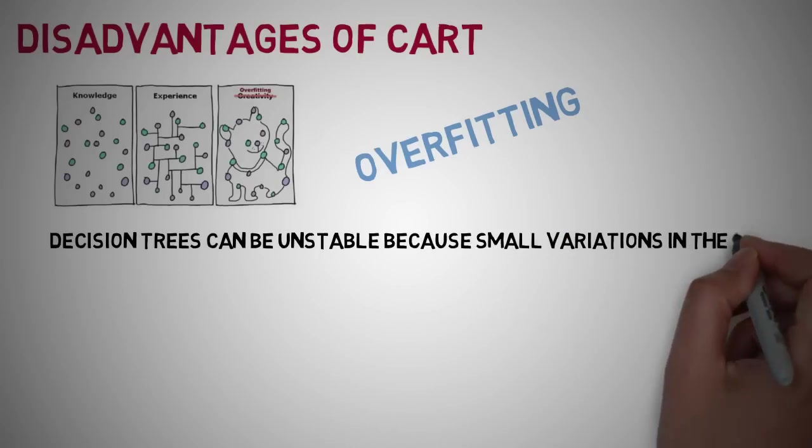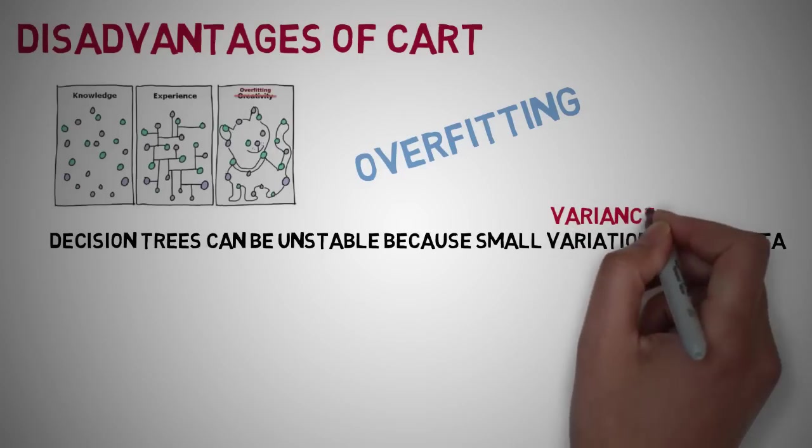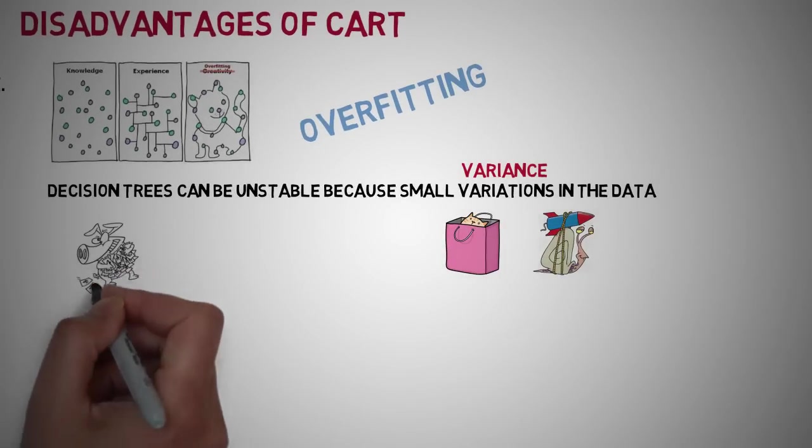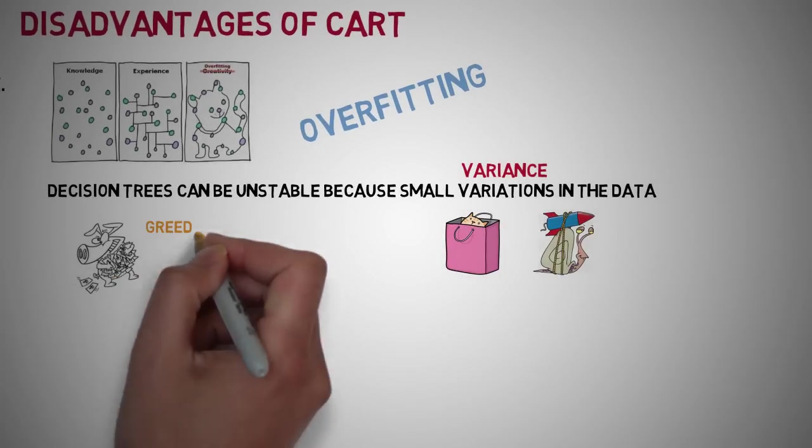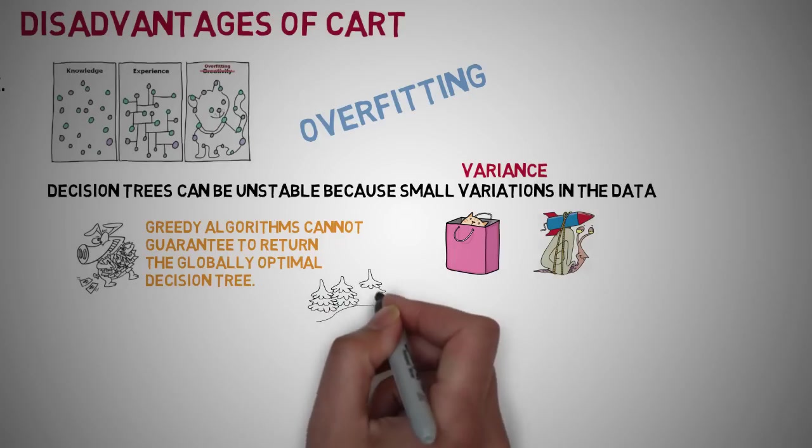Decision trees can become unstable because small variations in the data might result in a completely different tree being generated. This is called variance, which needs to be lowered by methods of bagging and boosting. Greedy algorithms cannot guarantee to return the globally optimal decision tree. This can be mitigated by training multiple trees.